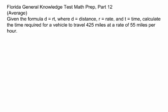Given the formula D equals R times T, where D equals distance, R equals rate, and T equals time, calculate the time required for a vehicle to travel 425 miles at a rate of 55 miles per hour.